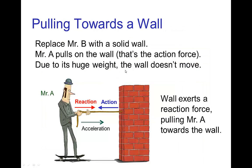So if we consider yet another situation where we replace Mr. B with a solid wall that can't move, then when Mr. A pulls on the rope, that's the action. But since the wall is massive, it is not moving any significant amount, and Mr. A will accelerate towards the wall. So the force that actually moves Mr. A is the reaction force from the wall transmitted through the rope, which is the result of the action of him pulling on the wall.